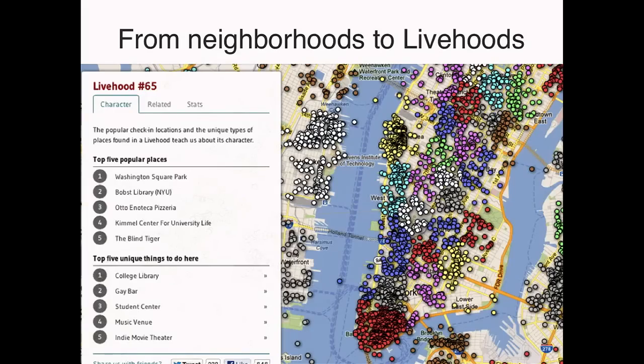Researchers out of CMU took this a step further by actually trying to redraw neighborhood boundaries based on this social activity data. They decided to scrap traditional neighborhoods and create things called 'livehoods' — clusters of places in New York City that have similar behavioral characteristics. It's amazing to think about what this would have looked like 20 years ago: you'd hire a cartographer to draw neighborhood boundaries. Here, we've essentially hired a million people to map the city and figure out which areas are similar and which are different.